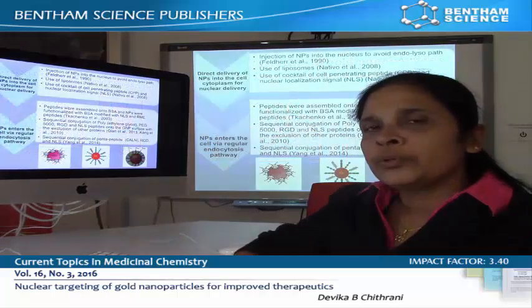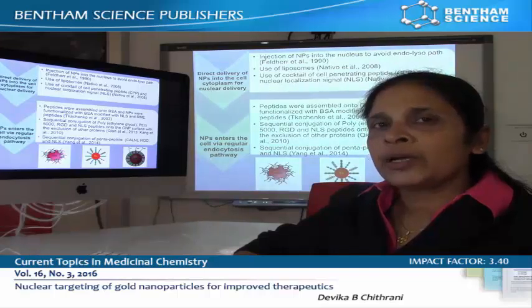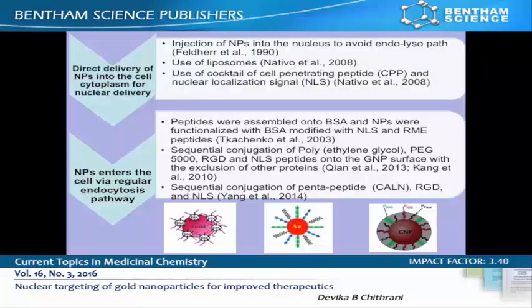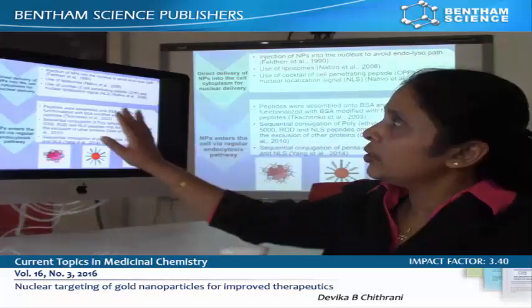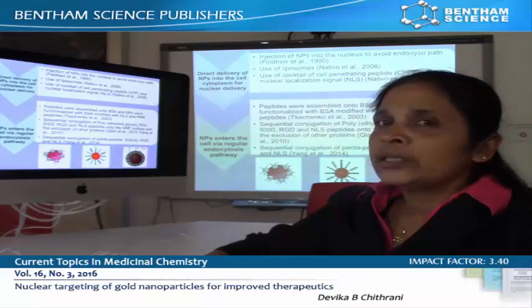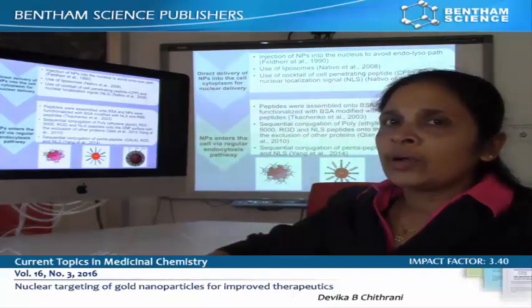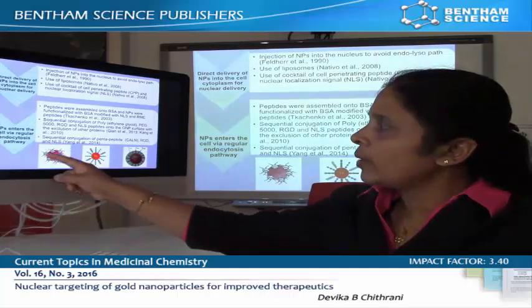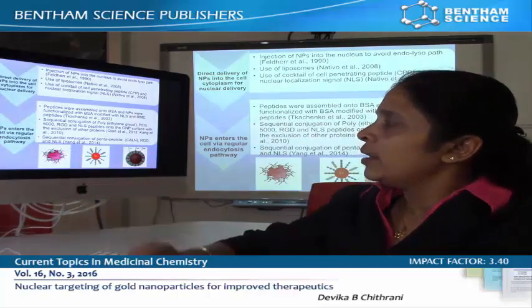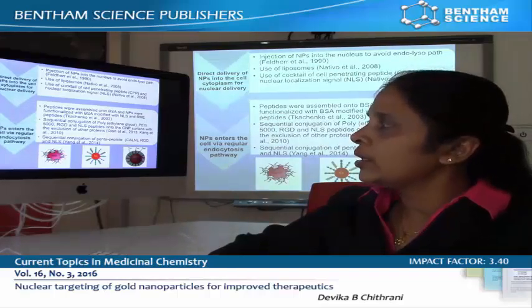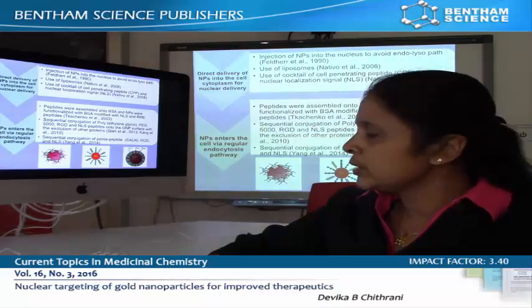There are two approaches if we were to target these nanoparticles into the nucleus. In the first approach, we will escape the endolysosomal pathway by directly injecting these nanoparticles into the nucleus. In the second approach, what we do is we will have a cocktail of peptides on the surface of the gold nanoparticles and use the regular endolysosomal pathway to transfer these nanoparticles into the cells.